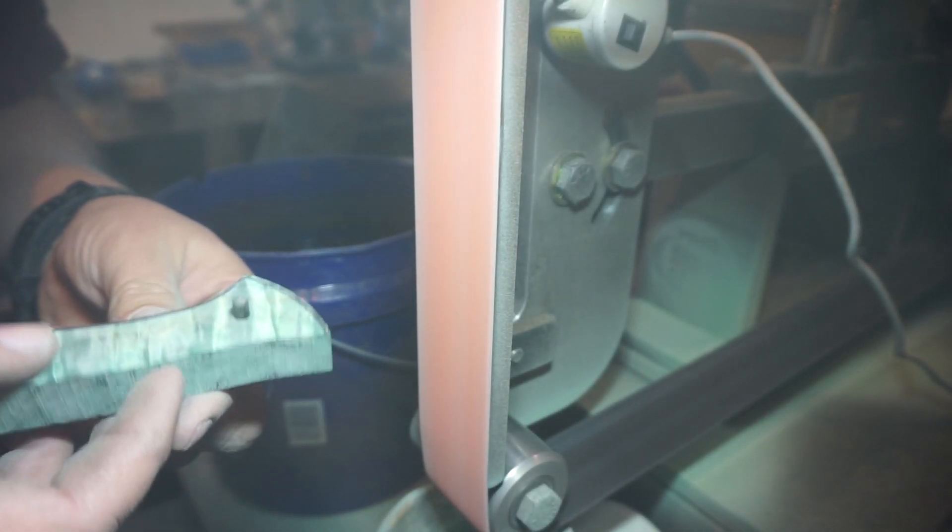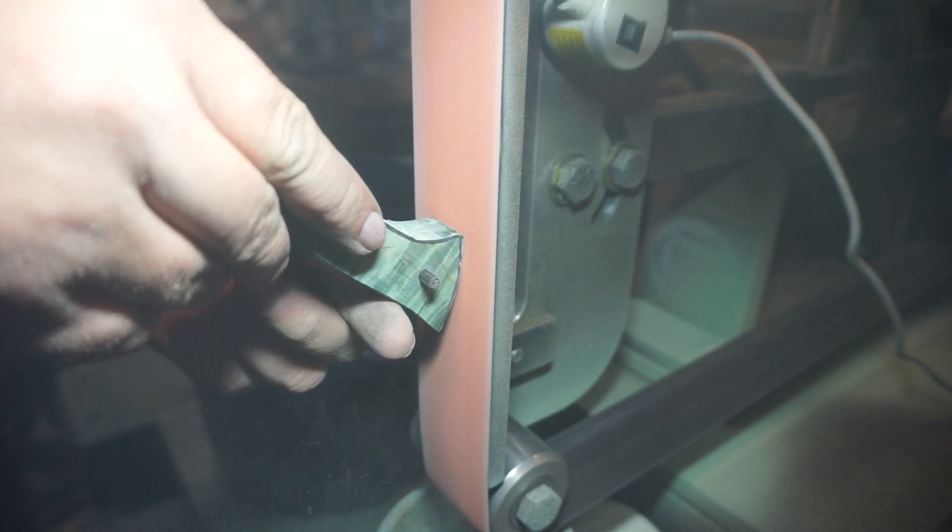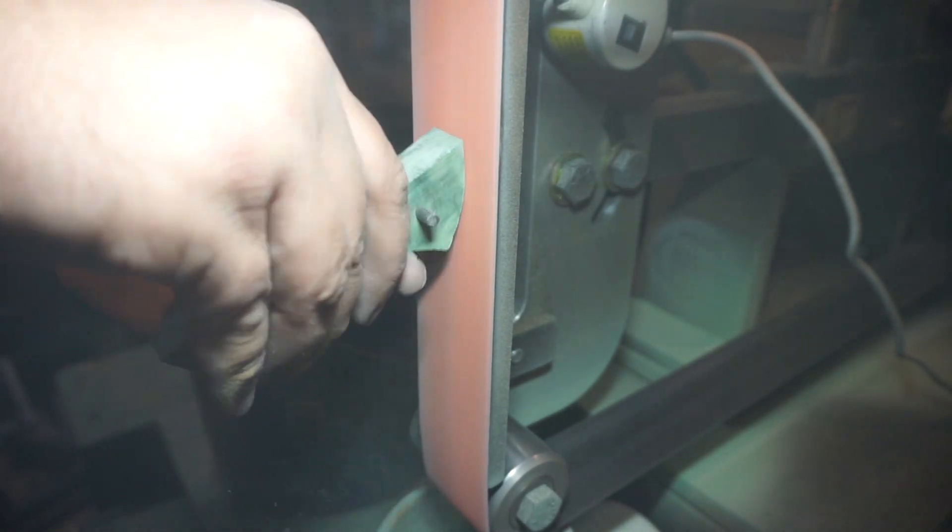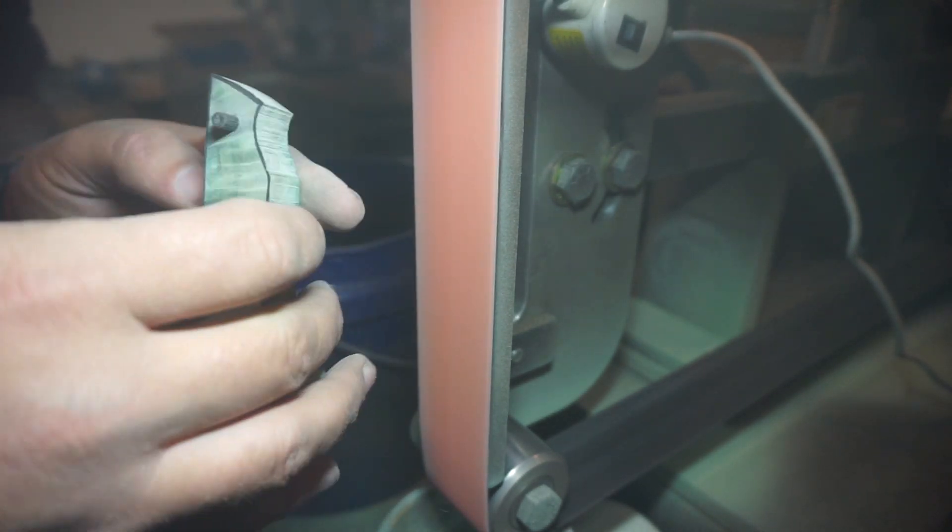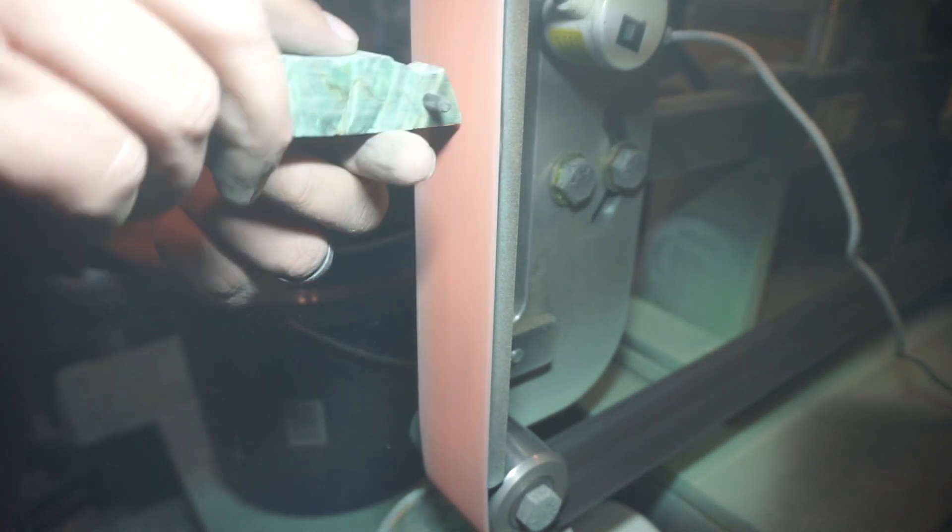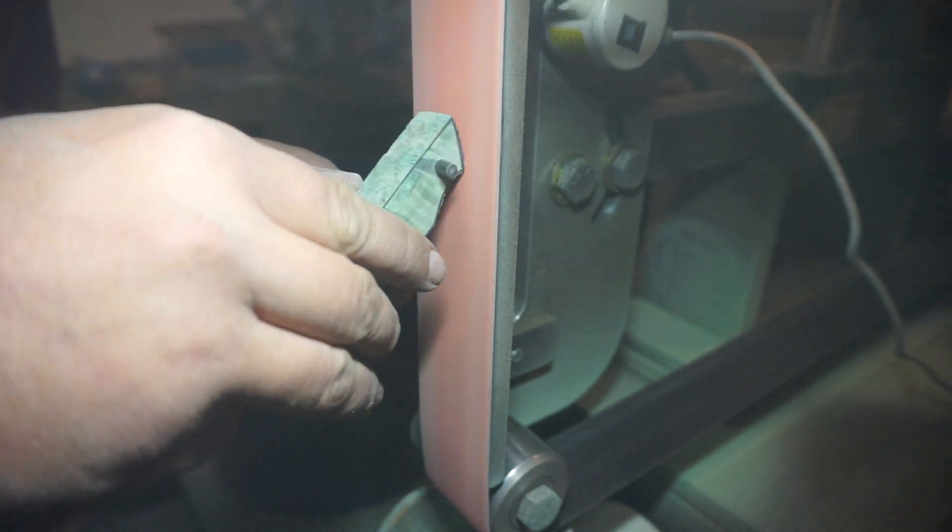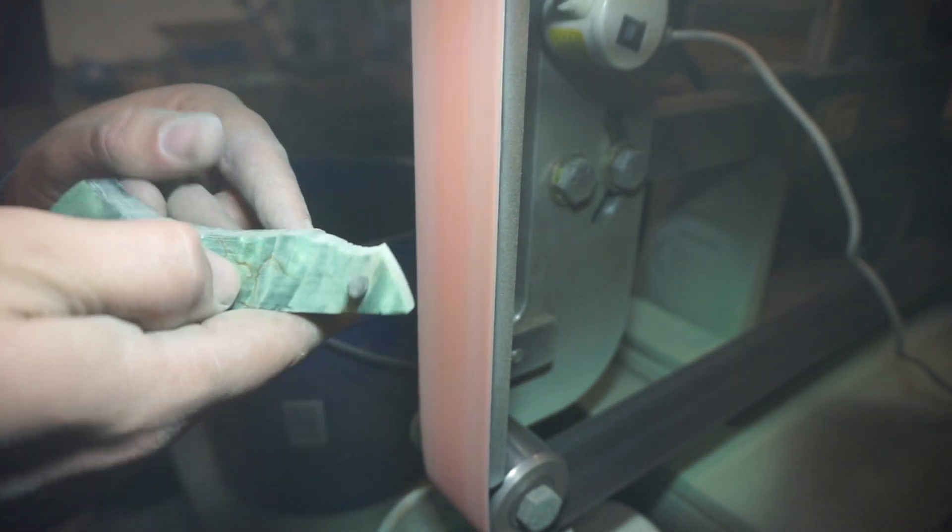Now I use a 36 grit belt to do a lot of the shaping on this, primarily because it does not burn this wood. The higher grit you go when trying to shape, the more chance you're going to risk burning the wood, and then you got to sand past that and you waste material. So I use a lower grit whenever I'm doing all this shaping.